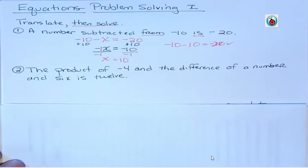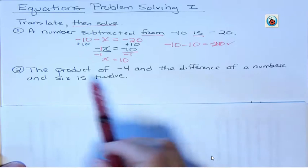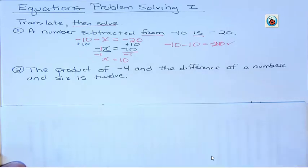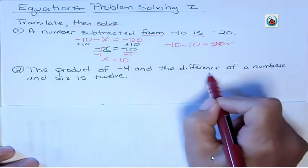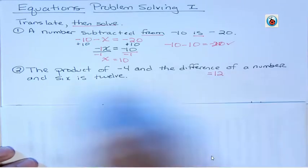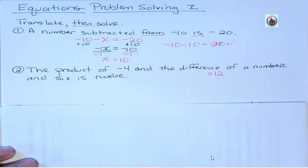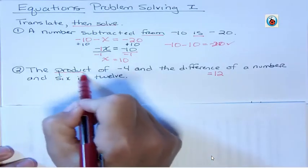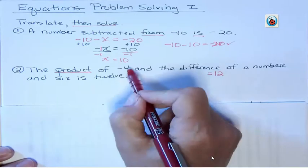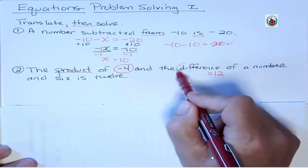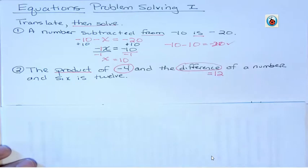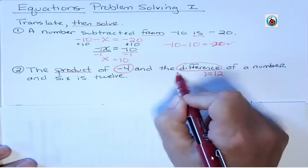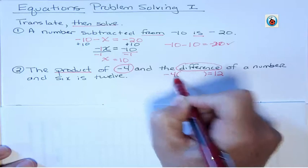Again, we're translating. We have to know the terms product, sum, difference, quotient, because those are going to be used. The product of negative 4 and the difference of a number in 6 is 12. Well, the easy part that I want to go for right now is this. It is 12. That means that what we're going to write is going to be equal to 12. Do what you can and start filling in the pieces. The next thing I'm seeing here is that we have a product. What are we multiplying? We're multiplying negative 4 and a difference. So I want to say I'm going to write my difference in parentheses, and I'm going to multiply that times negative 4.